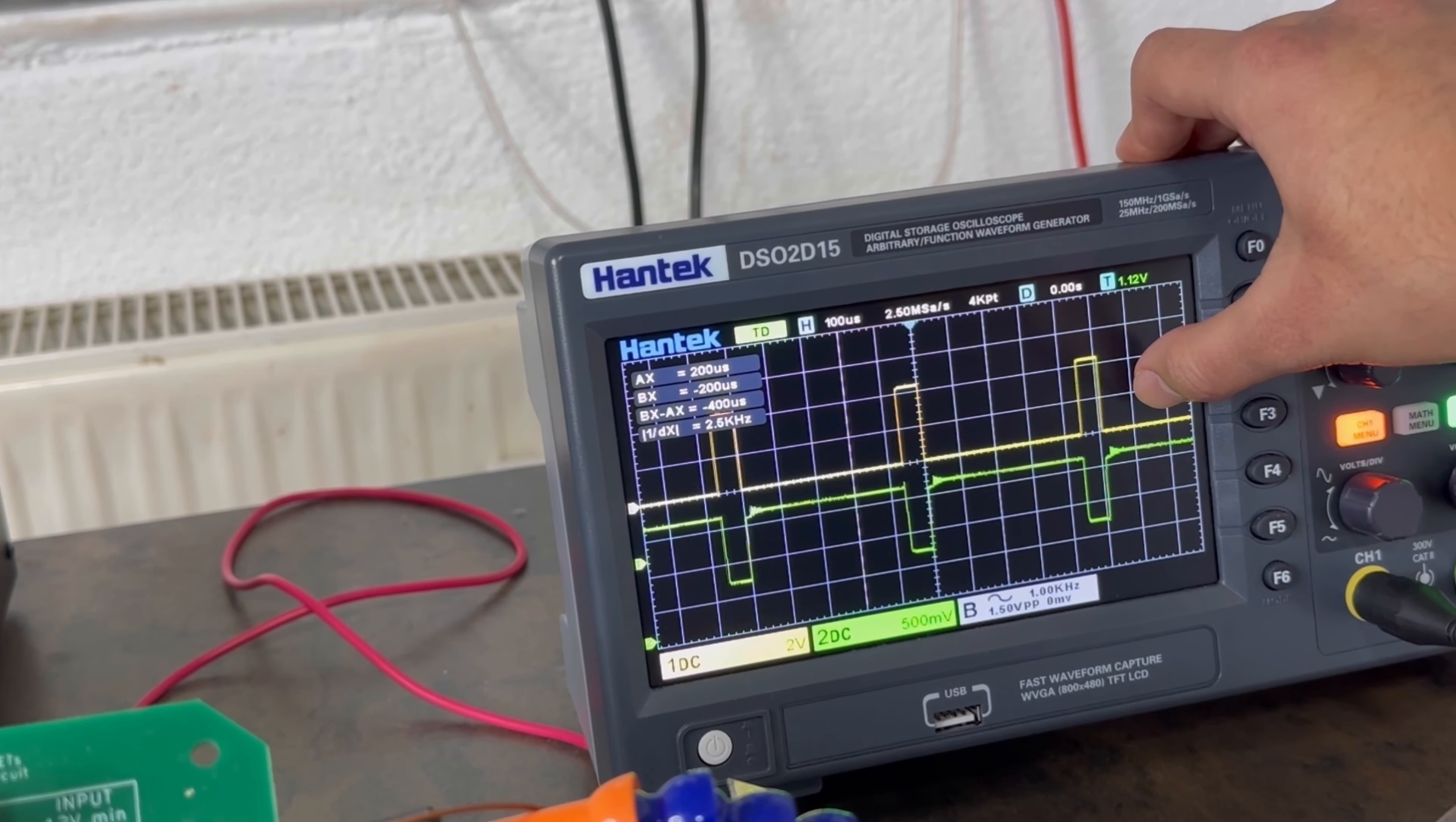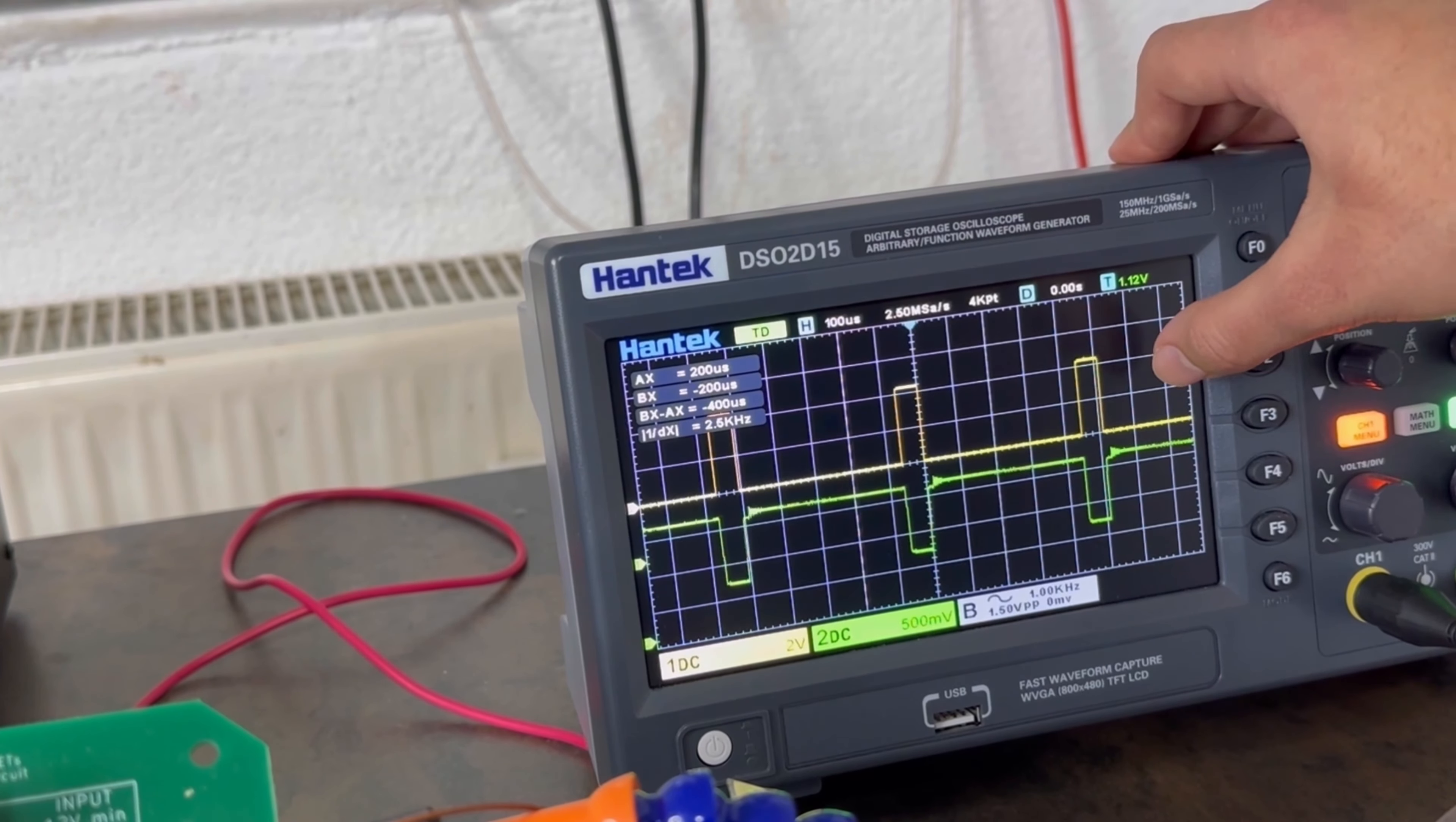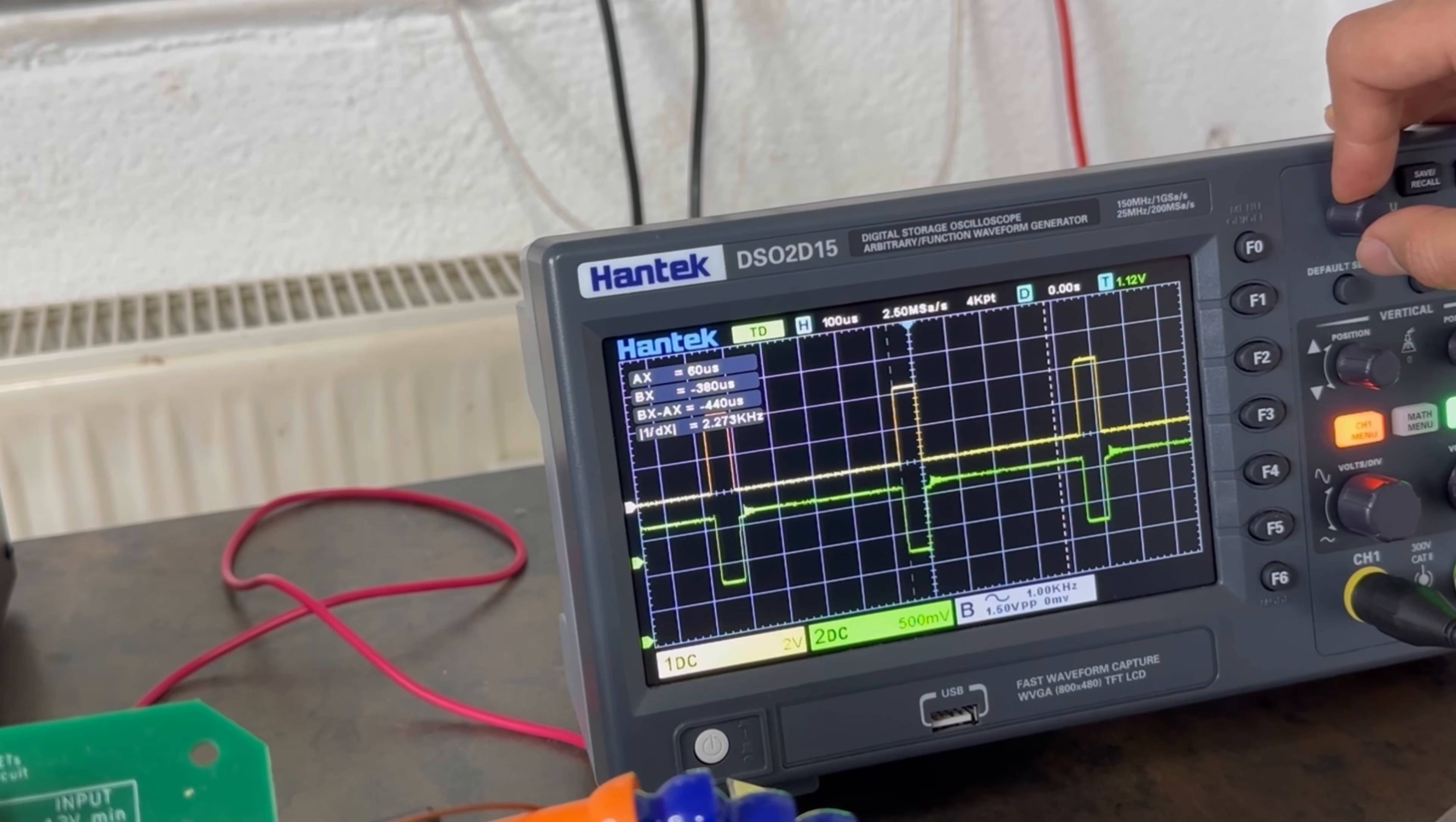This waveform is at TP2 and this waveform is at TP4. So, as you can see, when TP2 is high, the TP4 is low. And when the TP4 is high, the TP2 is low. We can even calculate the frequency of this circuit, which is around 2 kHz.